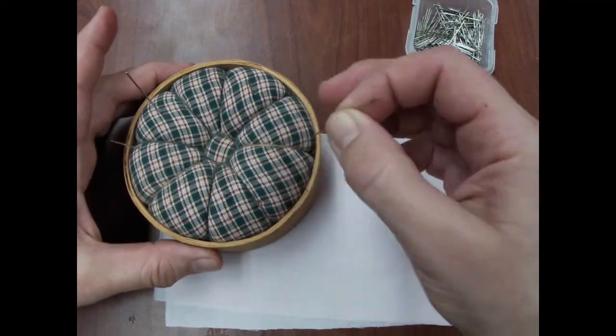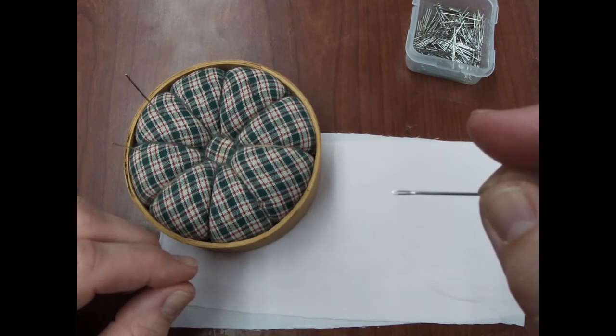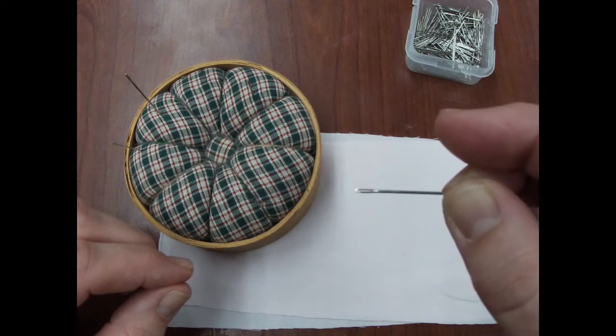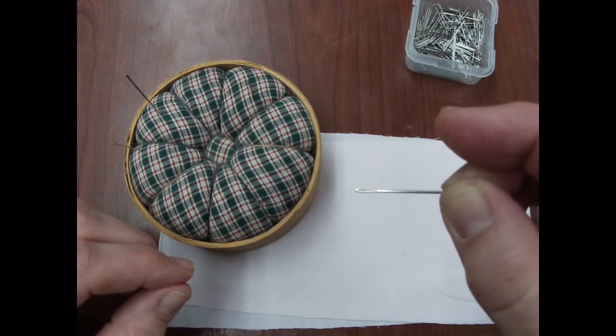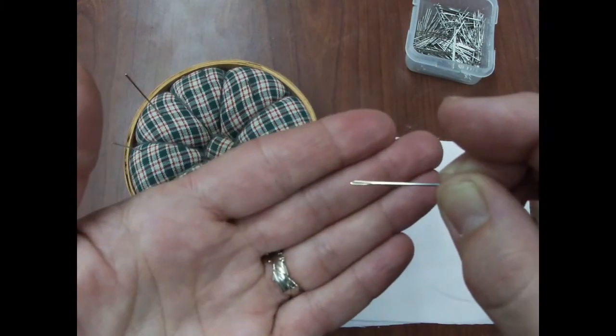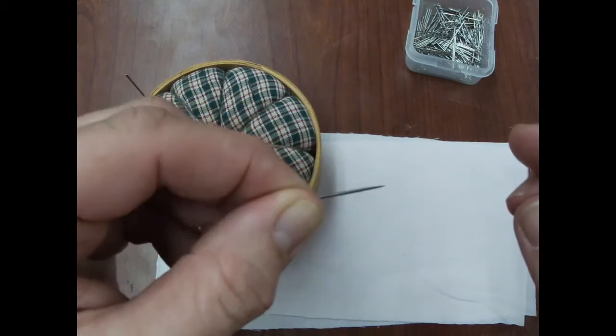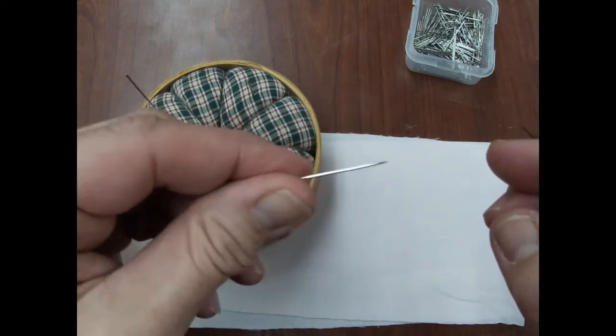And then a sewing needle has a hole in one side that's called the eye of the needle, and that is for threading the needle. So you put your thread through the eye of the needle, and then the other side has a point, which is sharp, for getting it through the fabric.